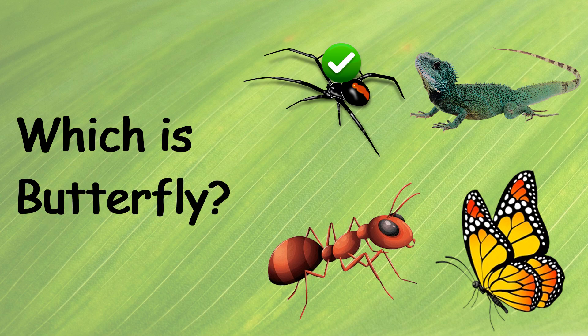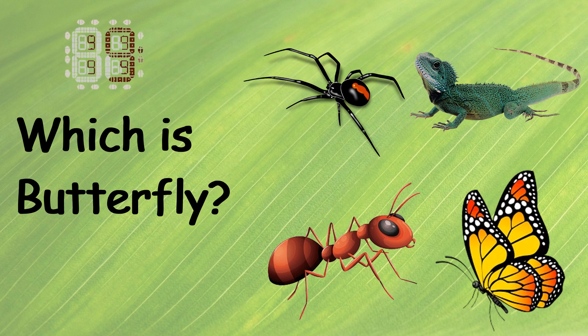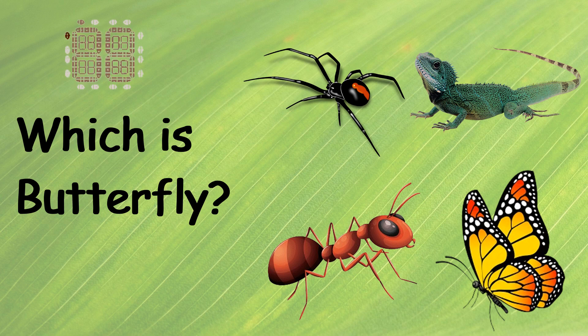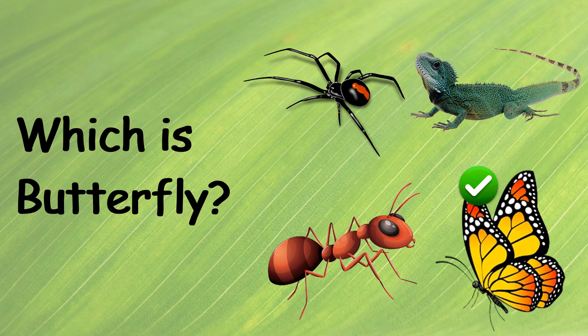Which is Butterfly? Ten, nine, eight, seven, six, five, four, three, two, one, zero. This is the right one.